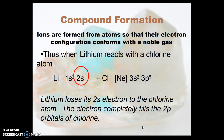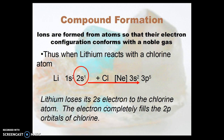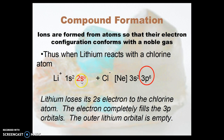When lithium reacts with a chlorine atom, lithium loses its 2s electron to the chlorine atom. The electron then completely fills the 2p orbitals of chlorine. We can diagram it like this, and we end up with 2s⁰ and a plus charge on the lithium, and 3p⁶ on the chloride with a negative charge. Notice the chloride is actually a different name than chlorine.